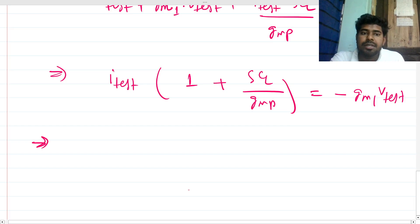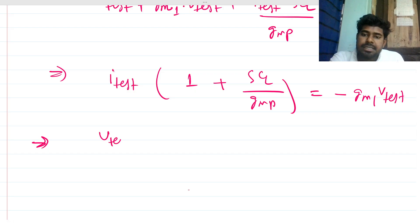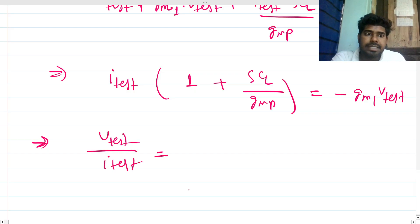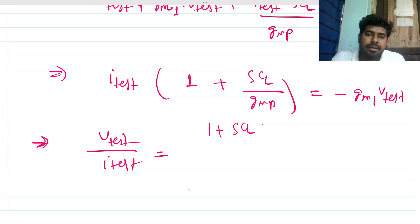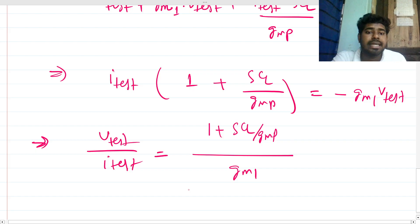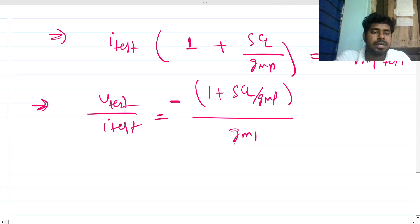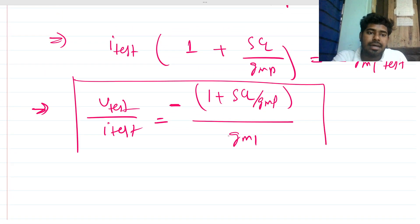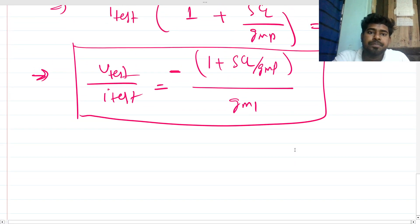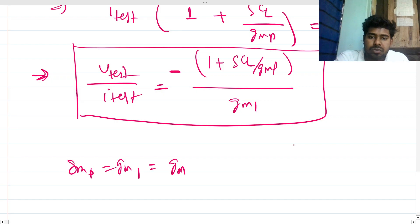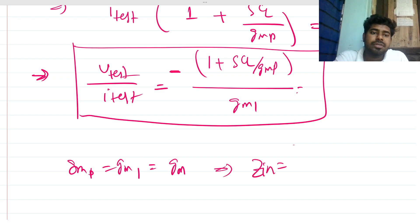So V_test / I_test = −(1 + sCL/gmp) / gm1. This is the final expression and it carries a negative sign, so the impedance is actually a negative impedance. If gmp = gm1 = gm, we can simplify Z_in to: Z_in = −1/gm − sCL/gm².